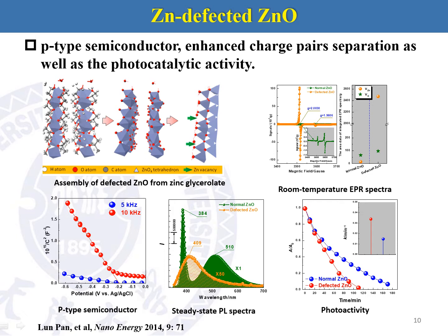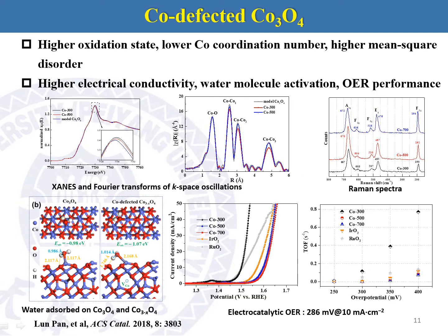We first produce the precursor zinc glycerolate, which is also in a layered structure. After semi-calcination, we obtain zinc-defected zinc oxide. In the room-temperature EPR spectra, we find strong signals of zinc vacancies, and the concentration of zinc vacancies is about 20 to 30 times higher than that of normal oxygen vacancies. We can also find a typical PL peak in steady-state PL spectra. Importantly, the zinc-defected zinc oxide shows higher photodegradation than normal zinc oxide.